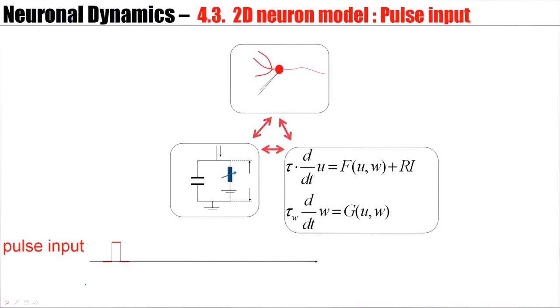Let's consider pulse input. An experimentalist may inject a very short current pulse into the neuron. The effect of this can be described in a Hodgkin-Huxley type model. Now we have reduced this to a two-dimensional neuron model. The pulse input would come in here, in the voltage equation. Let's see how this works.